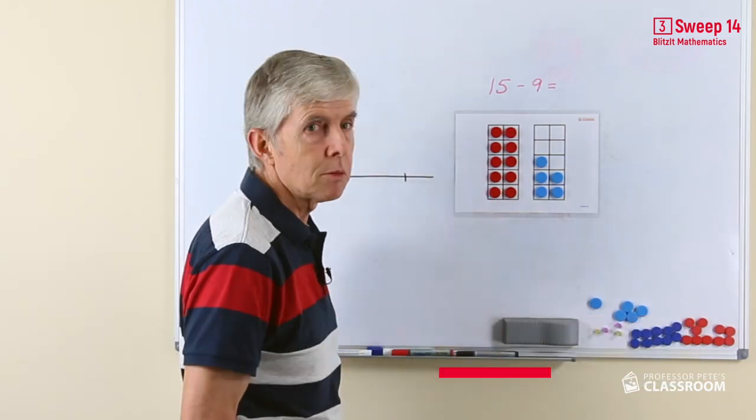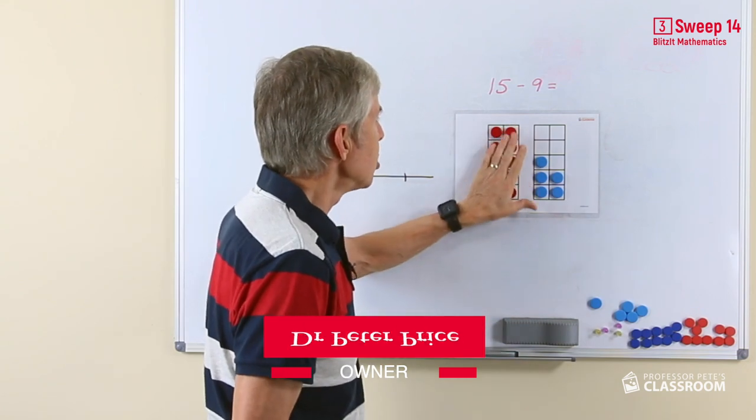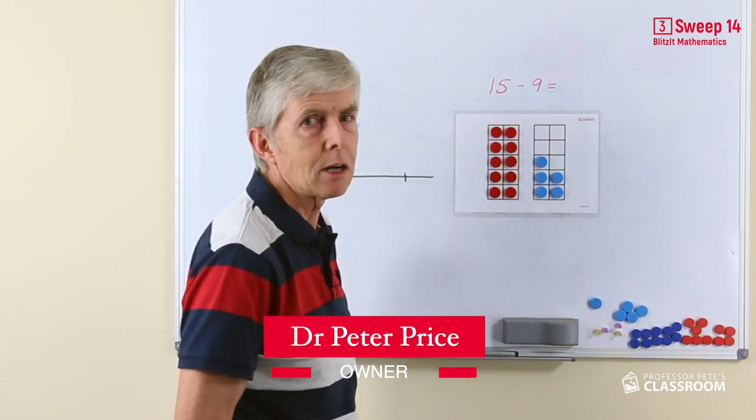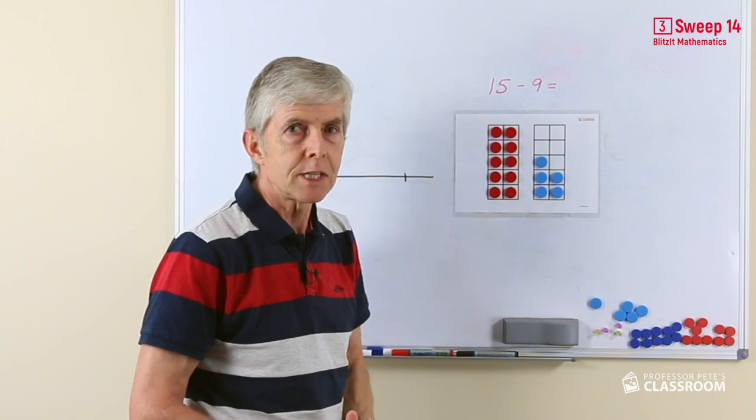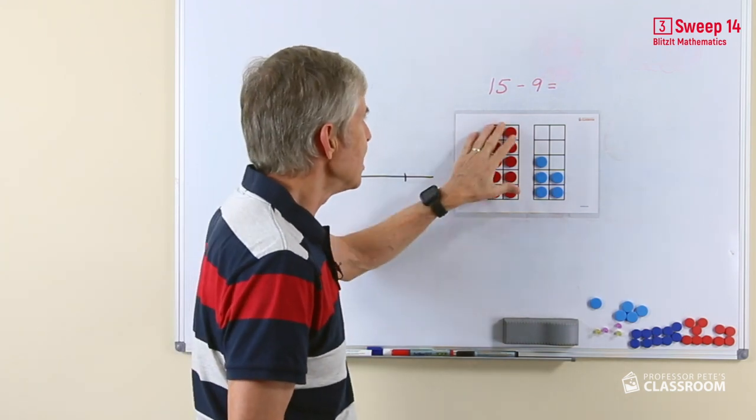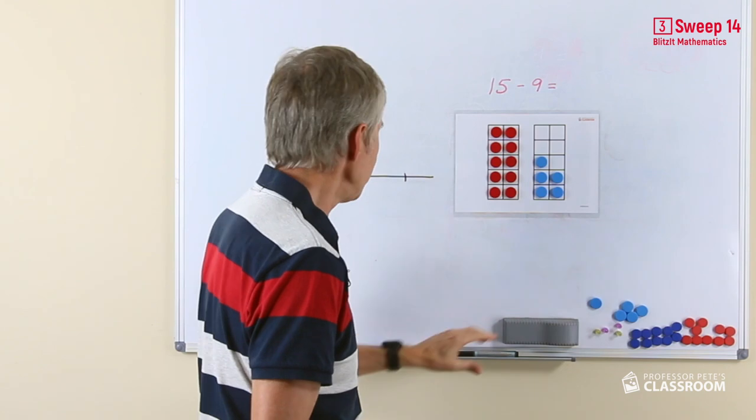Here's an example. We have 15 on the board, so we have a group of 10 and 5. If we were taking away 9 with the 10 frames, this is not difficult at all. You can see there's 10 here. If we took away 9, that would be easy.